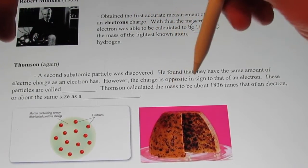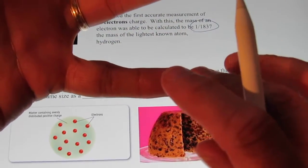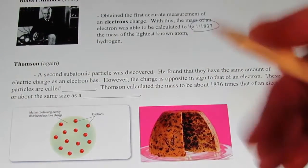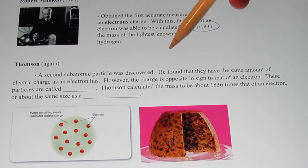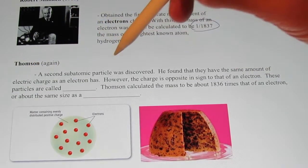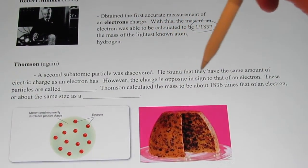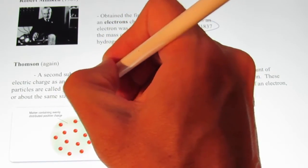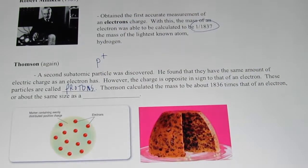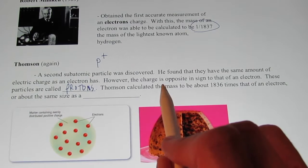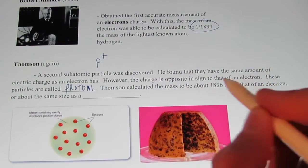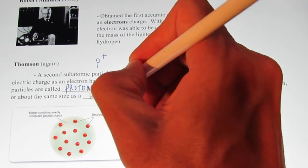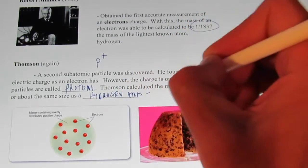Thomson also discovered a second subatomic particle. Since matter is electrically neutral and we had negatively charged electrons, there must be something carrying a positive charge. Thomson found these particles have the same amount of electric charge as an electron but in the opposite direction — they are called protons, symbolized by a lowercase p with a positive sign. He calculated the mass of a proton to be about 1,836 times the size of an electron, approximately the size of a hydrogen atom minus its electron.